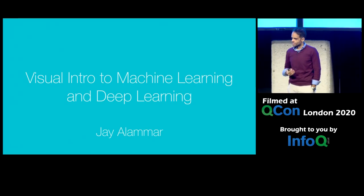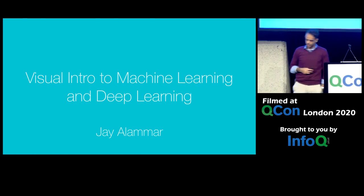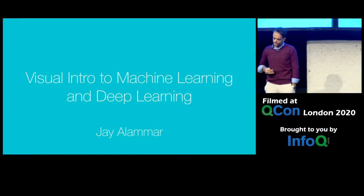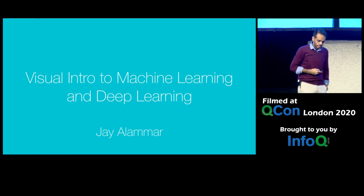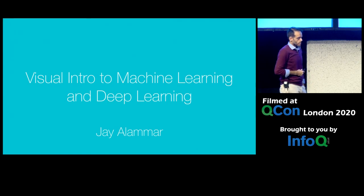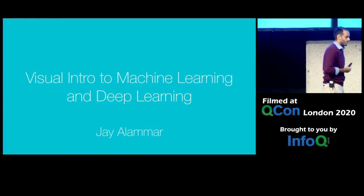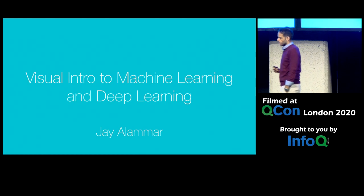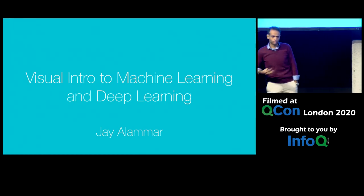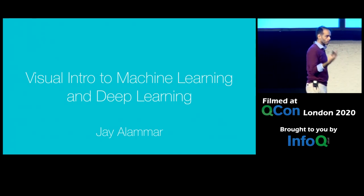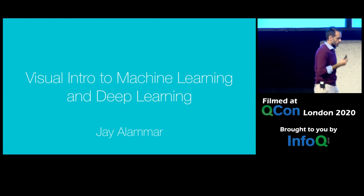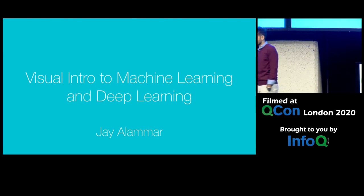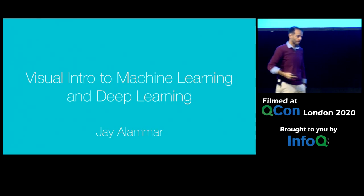Hello everybody, welcome. My name is Jay Alomar. I work in venture capital. I'm a software engineer by training. The last five years I've been trying to learn as much as I can about machine learning, and I found the best way for me to learn was to write and try to explain concepts. A lot of the times when I read about machine learning, I feel it's a little intimidating.